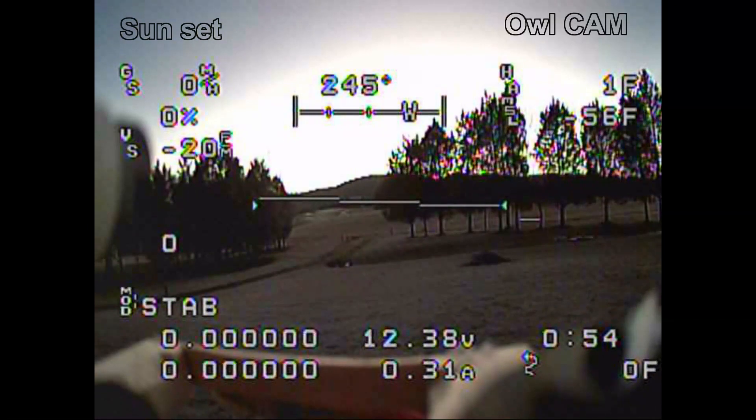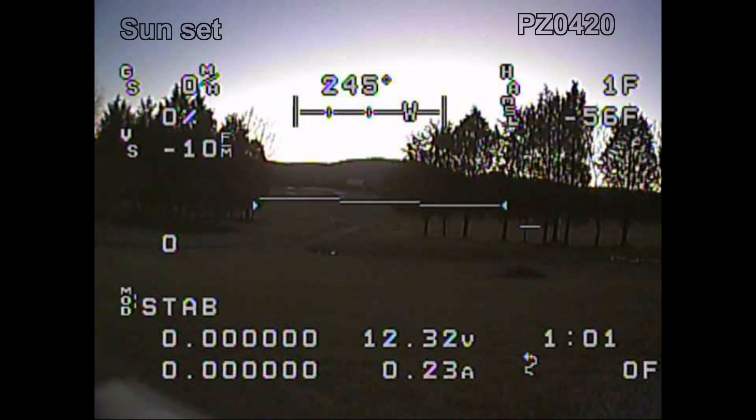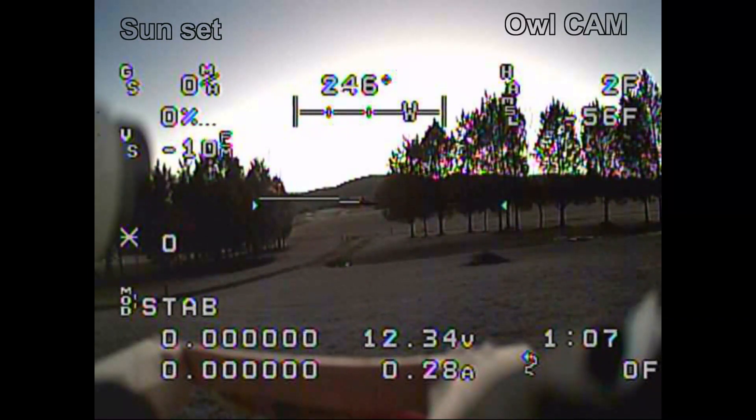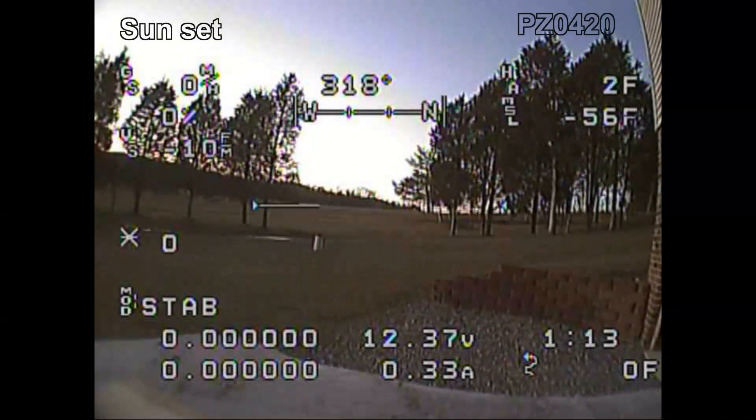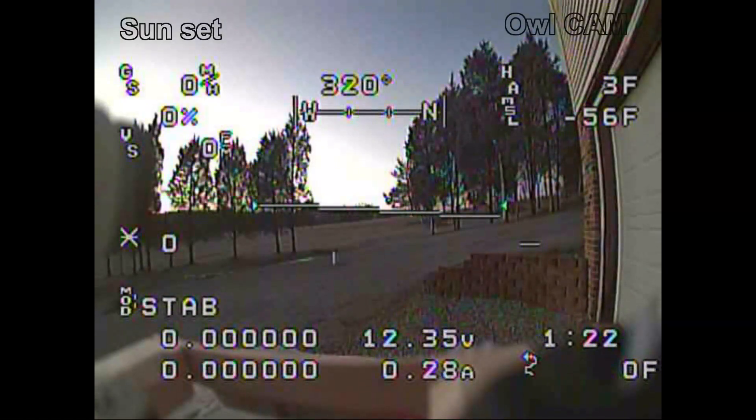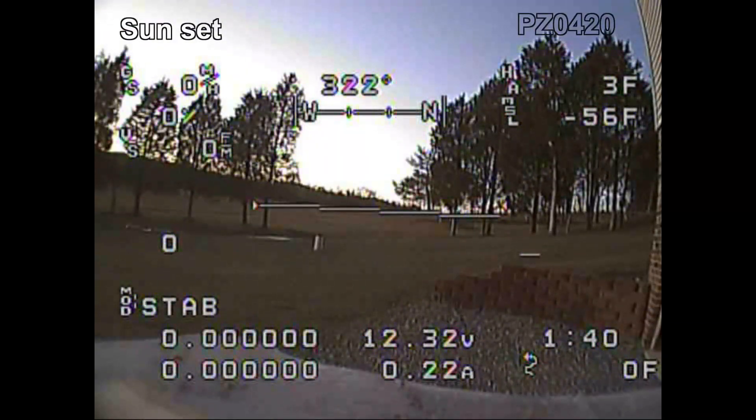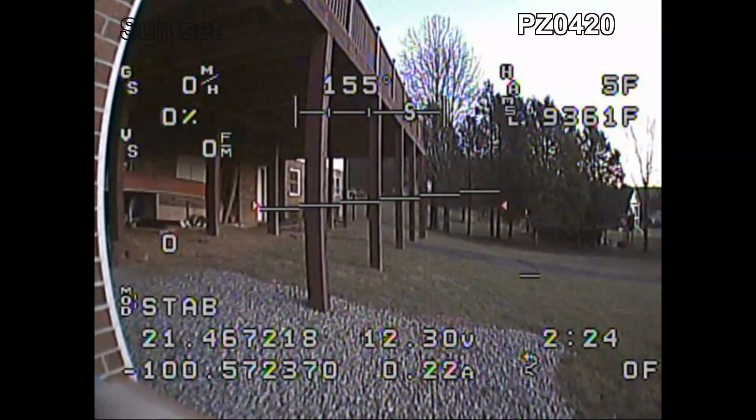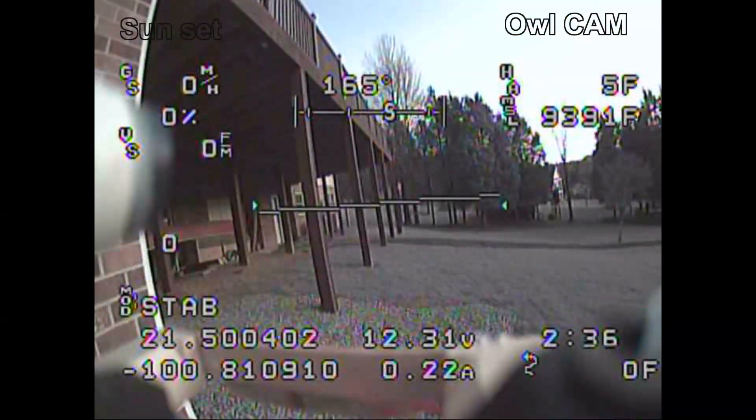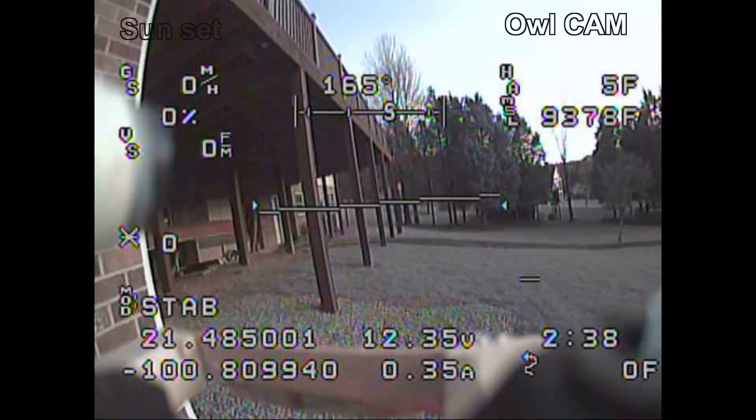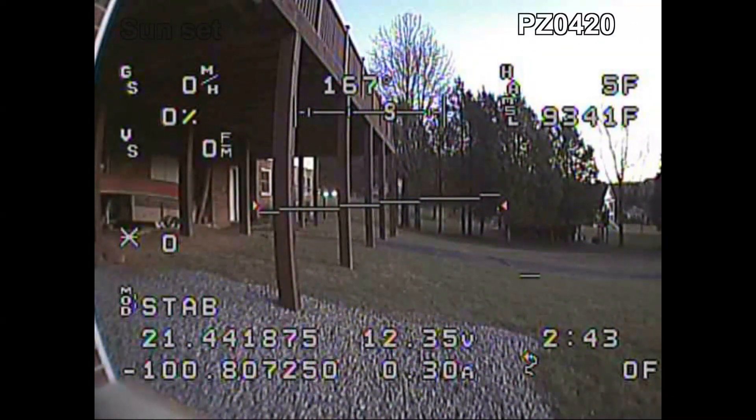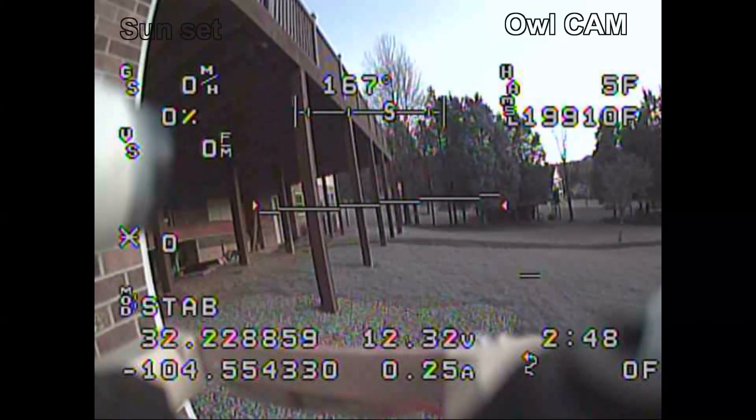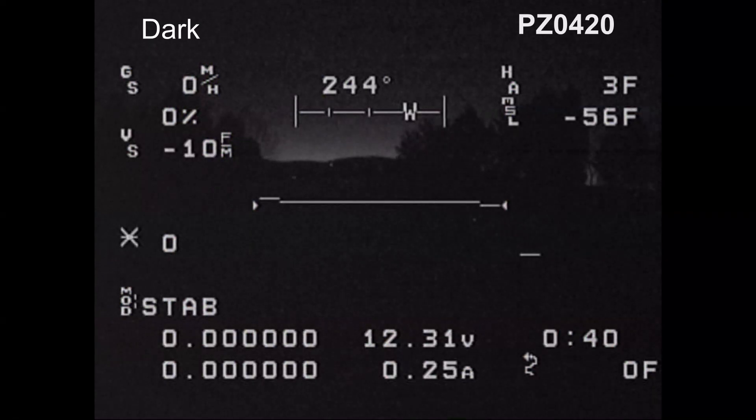Here's sunset. You can see the OWL camera really picks up more details in the shadows when the sun is behind the hill. I'm aiming different directions so you can get different lighting conditions. The PZ works perfectly well, but the OWL just looks a little sharper. There's also a difference in the field of view—the OWL camera is actually wider than the PZ0420. Of course that can be changed by switching lenses.